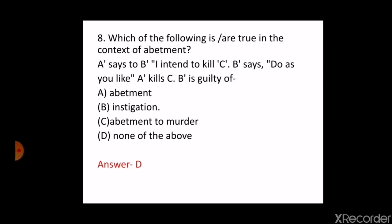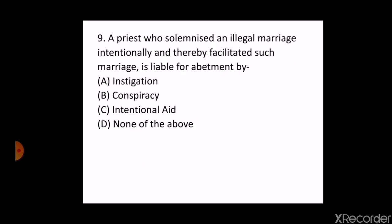The next question is: a priest who solemnized an illegal marriage intentionally and thereby facilitated such marriage is liable for abatment by — A. Instigation, B. Conspiracy, C. Intentional aid, D. None of the above. The correct answer is C — intentional aid. This was asked in the UP Preliminary examination in 2016.